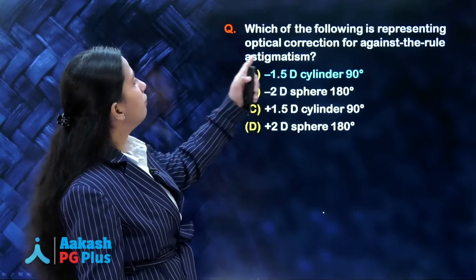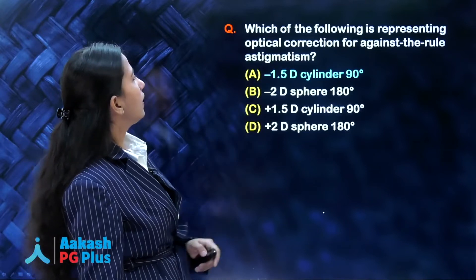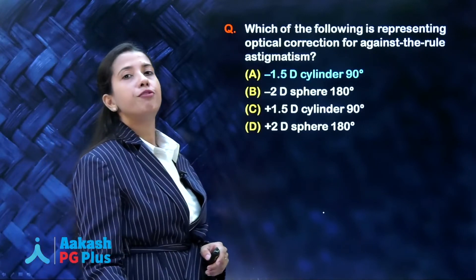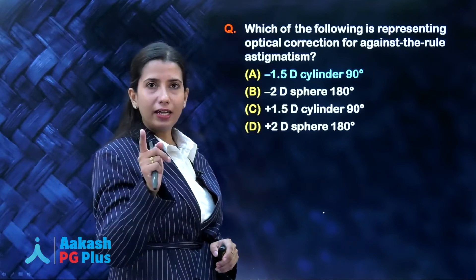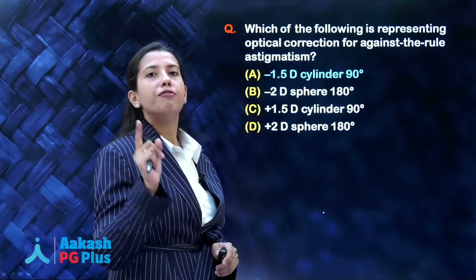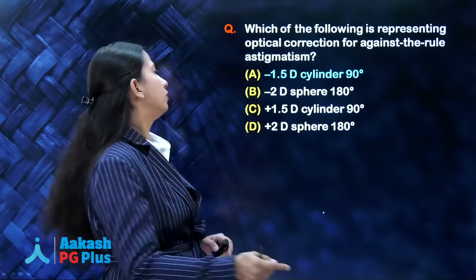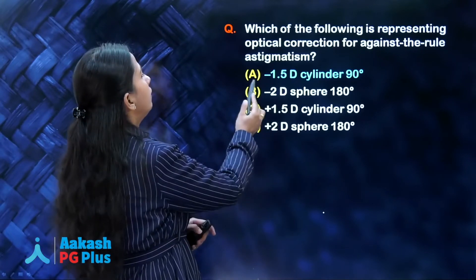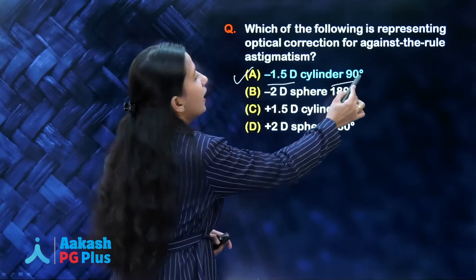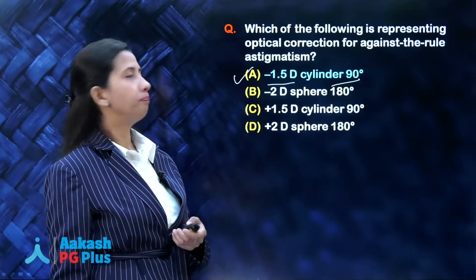Can we answer this question? We learned that plus at 90 is with the rule and minus at 90 is against the rule. In the first choice, you have minus cylinder at 90, so it is against the rule astigmatism. The answer is A.